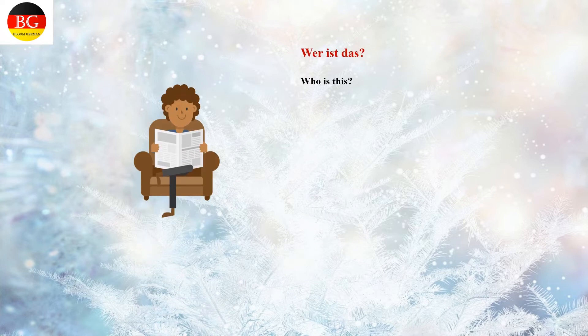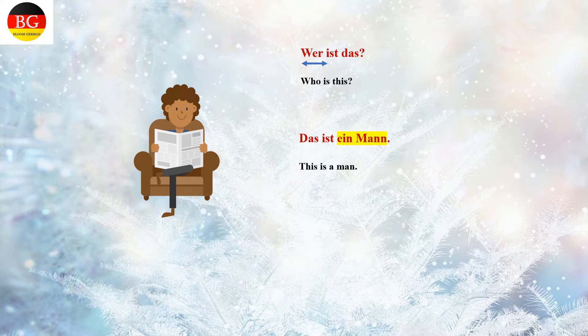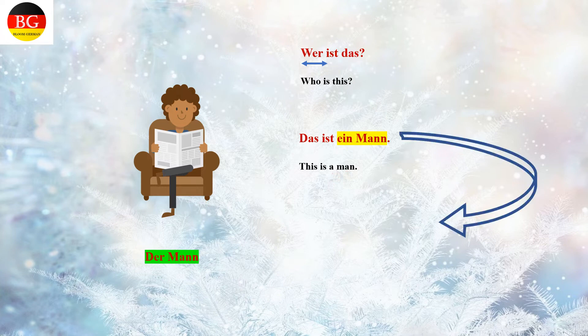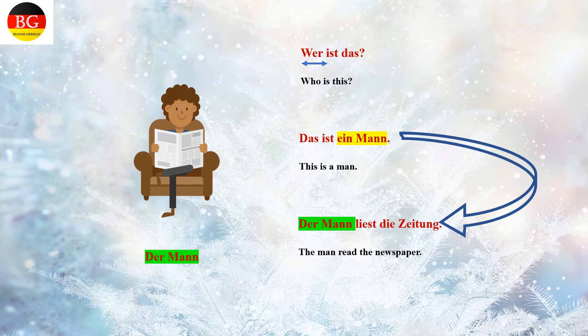Let us discuss the unbestimmter Artikel with the help of some examples. 'Wer ist das?' — 'Wer' is the WH word meaning 'who'. Das ist ein Mann. 'Der' is the bestimmter Artikel and 'ein' is the unbestimmter Artikel for 'Mann' — this is a man. In order to give more information about that Mann, we use the bestimmter Artikel: 'Der Mann liest die Zeitung' — the man reads the newspaper.